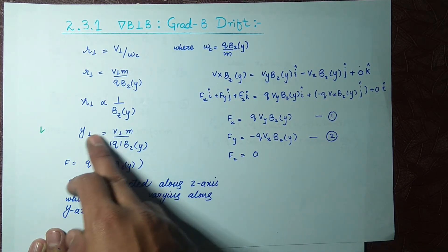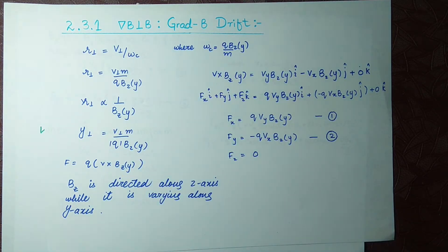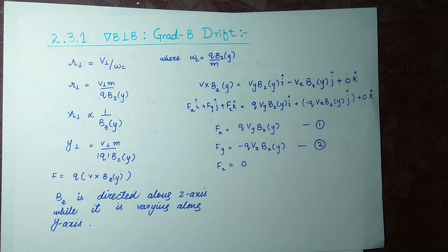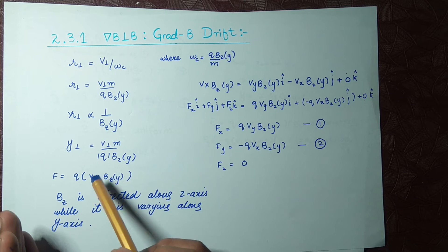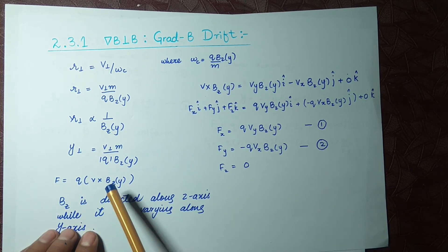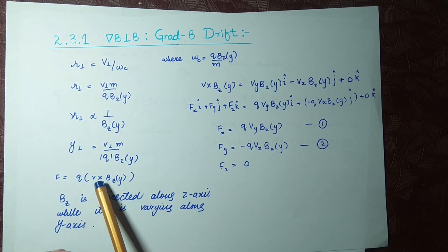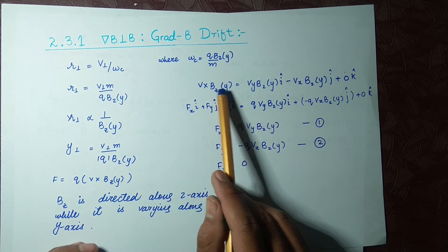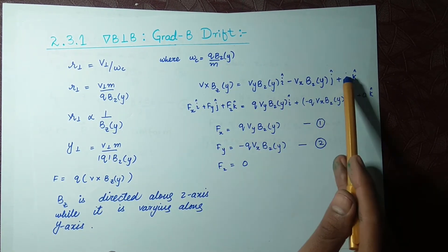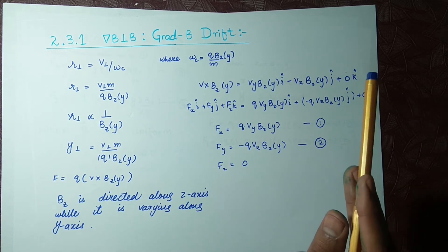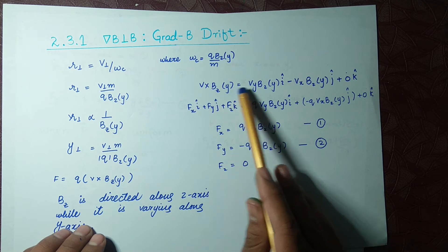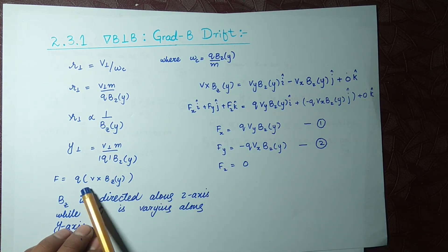Moving on to the derivation for gradient drift velocity. F is equal to the Lorentz force — just like our first case with E=0 — so F = q(v × B). Here F = q(v × Bz(y)). To find v × Bz we take the determinant, as we did in previous lectures. The result of v × Bz(y) is the term shown on screen, and we put this value into the force equation.